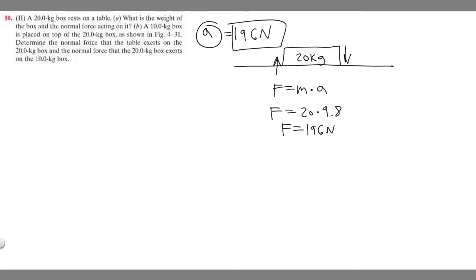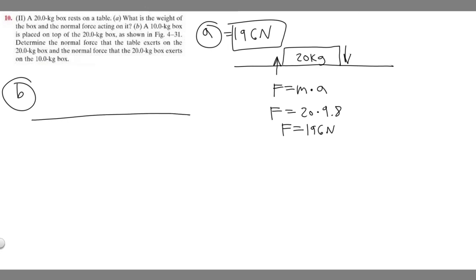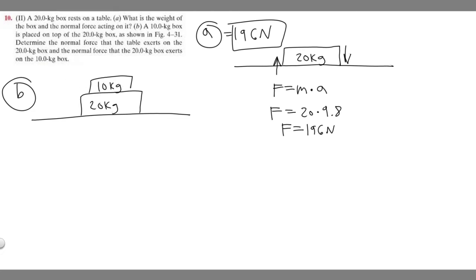Now let's move on to part B. We have a 10 kg box placed on top of the 20 kg box — essentially the same setup but with the additional box on top. We need to determine the normal force the table exerts on both boxes.